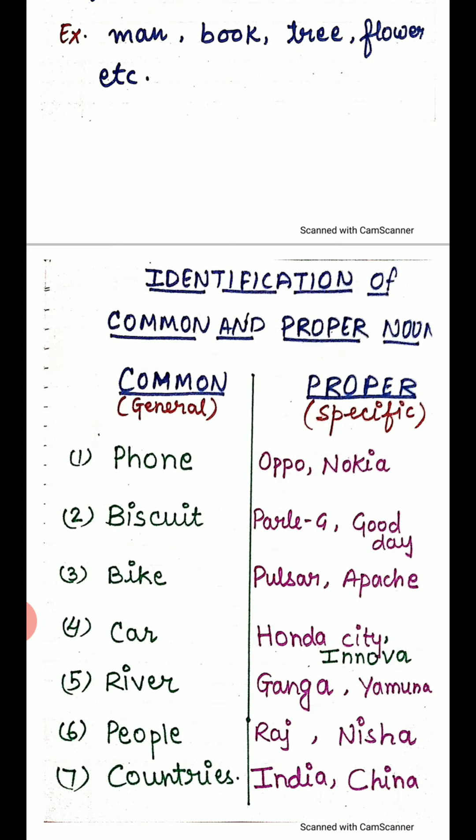Countries are another example. We have specific names — when we talk about India, China — these are all countries. Countries are many, but when we talk about a specific one, it becomes a proper noun. And the general term — country — we call that a common noun.